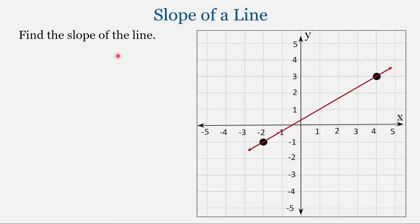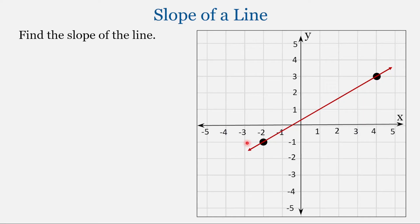So let's practice finding the slope of a line. Graph paper — paper that has grid lines on it — is going to be very useful when we're trying to find the slope of a line. We will use these grid lines as the vertical and horizontal lines to find the vertical and horizontal change: the rise and the run.